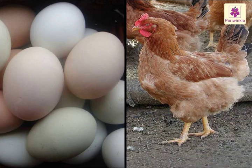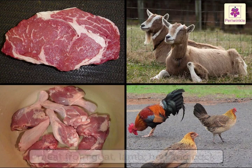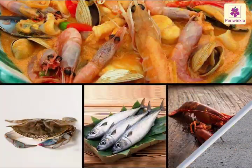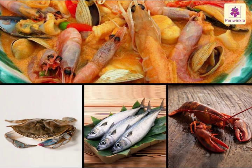We get eggs from hens. We get meat from goats, and chicken from hens and cocks. We also get seafood from crab, fish, lobster, and so on.